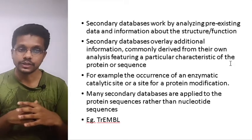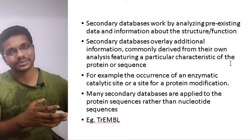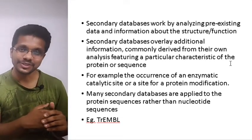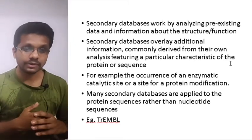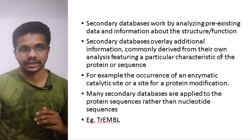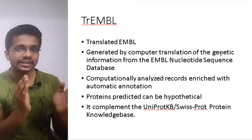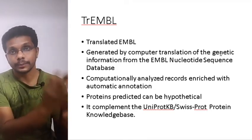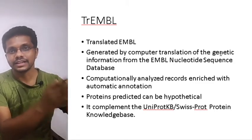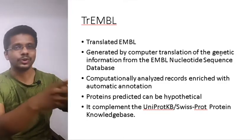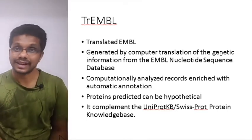Many secondary databases are applied to protein sequences rather than nucleotide sequences. While most primary databases are for nucleotides, most secondary databases deal with proteins. One example is TR-EMBL, which stands for Translated EMBL. EMBL is a nucleotide database; the computer translates nucleotide sequences in EMBL into protein sequences based on codon usage — that's why it's called Translated EMBL.